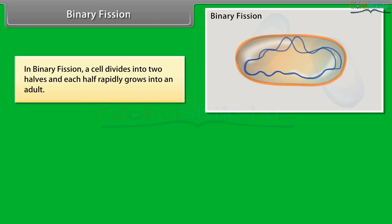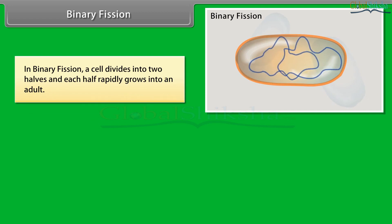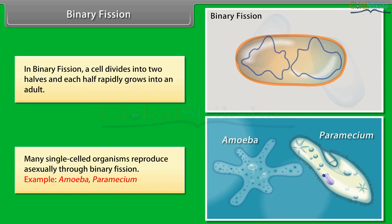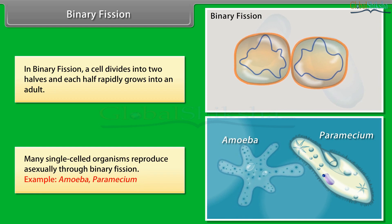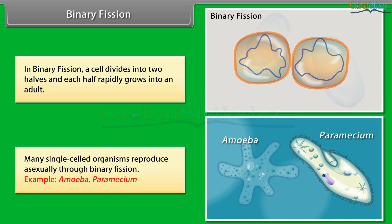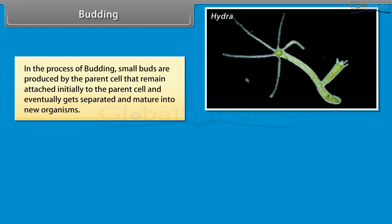In binary fission, a cell divides into two halves and each half rapidly grows into an adult. Many single-celled organisms reproduce asexually through binary fission, for example, Amoeba and Paramecium.